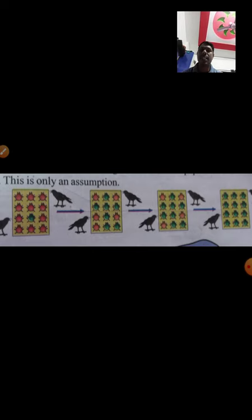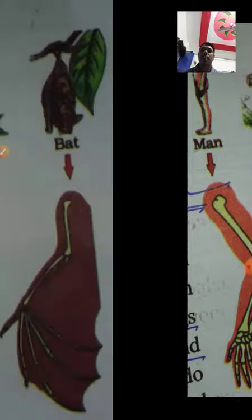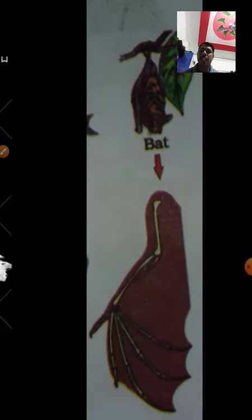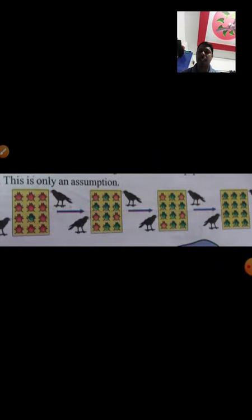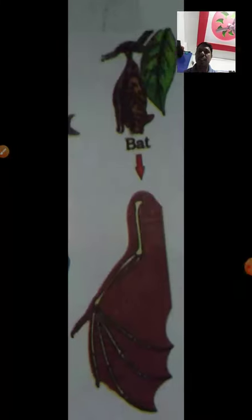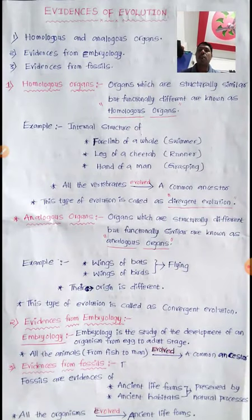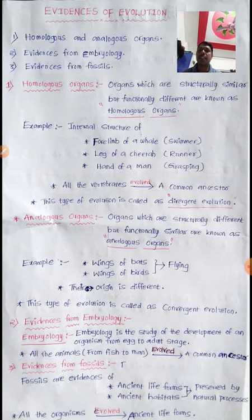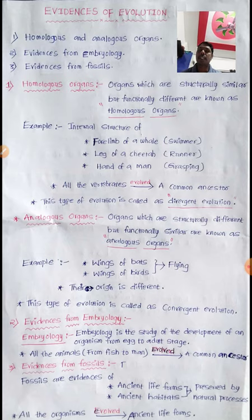Today we will discuss three evidences of evolution. The first evidence is homologous and analogous organs. The second one is evidence from embryology. The third one is evidence from fossils. First of all, we will discuss about homologous organs.